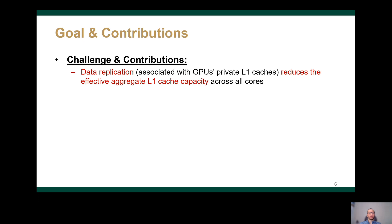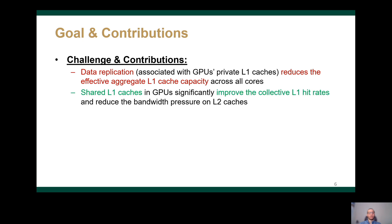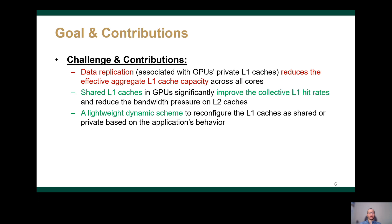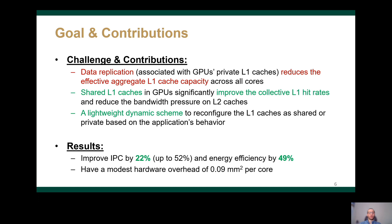We observed a similar problem in GPUs, in which the private nature of the L1 caches leads to data replication across the L1s, which reduces the collective L1 cache capacity. To eliminate such wasted capacity, we proposed a shared L1 cache design, which improves the collective L1 hit rate significantly and the overall performance. Given the affinity of some applications towards the private L1 cache design, we also propose a lightweight dynamic scheme that classifies the application as shared-friendly or private-friendly and configures the L1 caches accordingly. Our dynamic scheme improves performance over a private L1 baseline by 22% on average and improves energy efficiency by 49% on average.